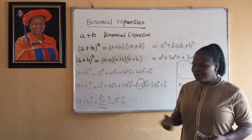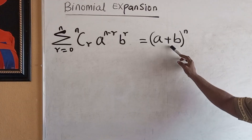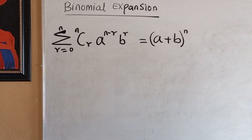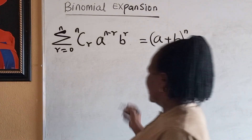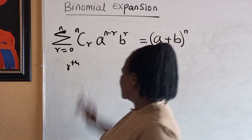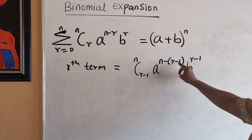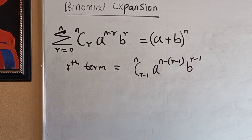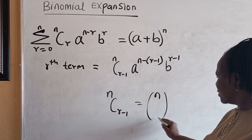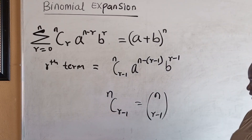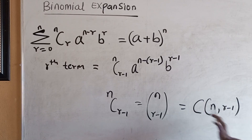We can get a desired term of the expansion without actually doing all of them. Note that this is the binomial expansion when N is a positive integer. The R-th term of this expression is given as N combination (R minus 1) times A raised to the power (N minus R minus 1) times B raised to the power (R minus 1). Note that N combination (R minus 1) can also be written in other equivalent ways.